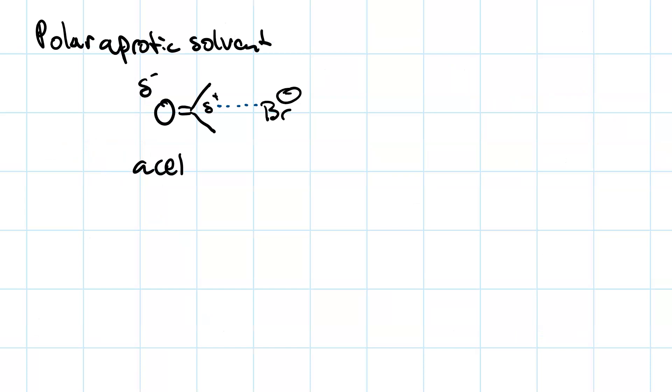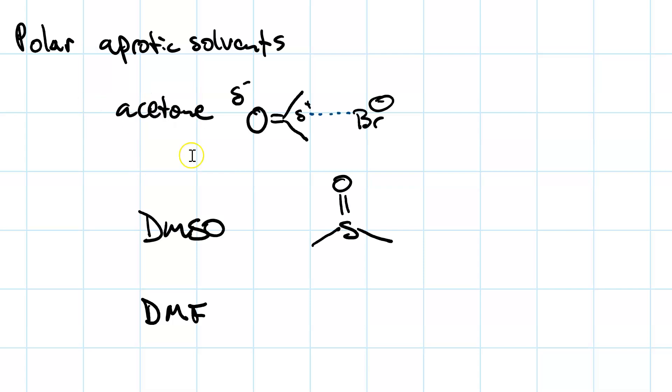Acetone is a good example of a polar aprotic solvent. Here's DMSO, dimethyl sulfoxide. The sulfur has some partial positive charge, but not enough to form a hydrogen bond with a nucleophile. DMF, or dimethyl formamide, is another example. A small amount of partial positive charge here, but not enough to hydrogen bond. Another good example of a polar aprotic solvent is ethers, like diethyl ether. When you see these, you should think, okay, we are favoring SN2.